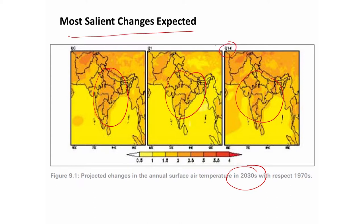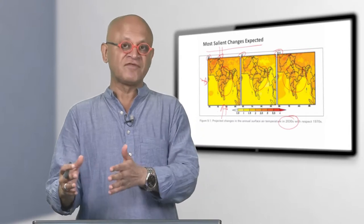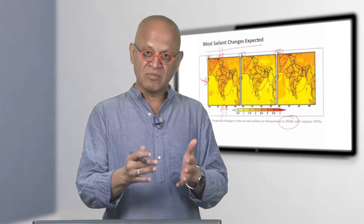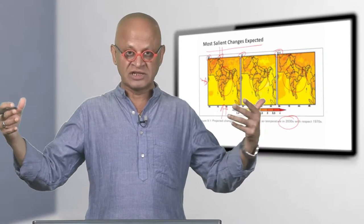The most salient changes expected that were projected using a regional model for India basically projects warming all over. These are different scenarios, different model simulations or different simulations of the same model. For example, different simulations from the same regional model may impose different global models at the boundaries.